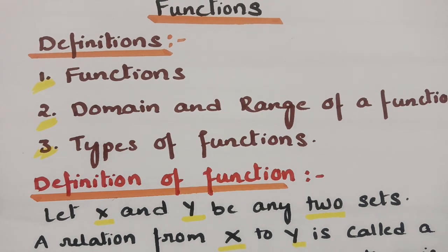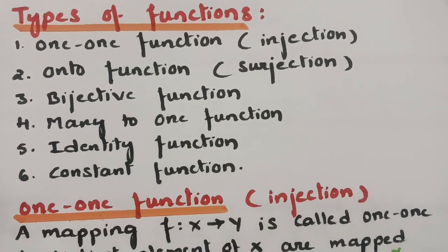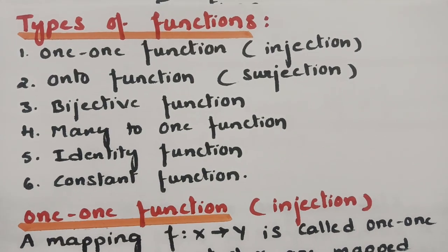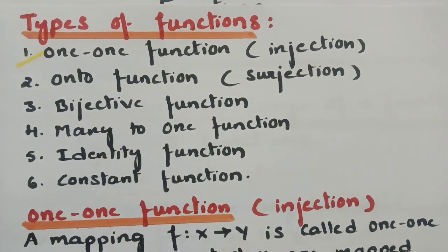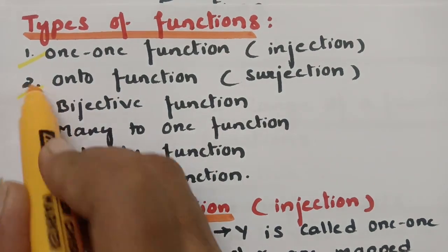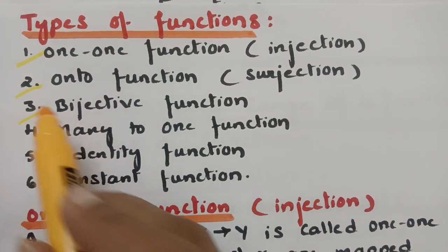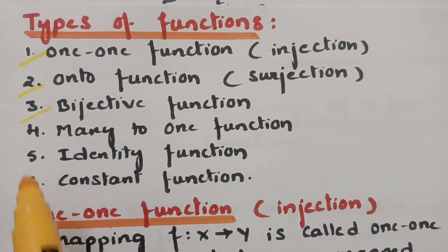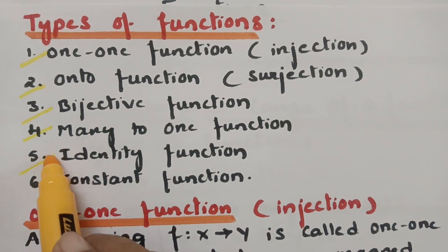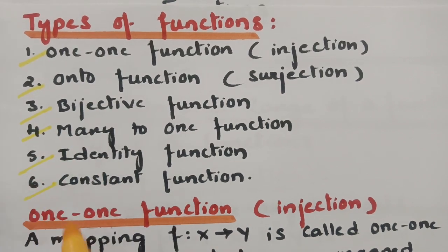Now discussing the types of functions — there are six types. The first one is the one-to-one function, also called injection. Next is onto function, also called surjection. If one-to-one and onto both hold, it is called a bijective function. Then there is many-to-one function, identity function, and constant function. I'll explain each one with an example clearly.